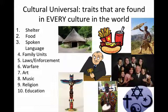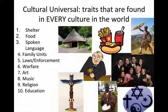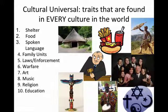If we look at the ten things that are in every single culture, you'll notice that they're all things that are necessary for survival. The first cultural universal is shelter. Obviously we need shelter because it protects us from the weather — if it's too hot, too cold, or raining, we need shelter for our own protection.